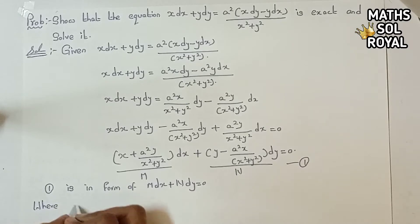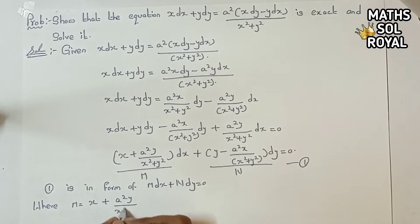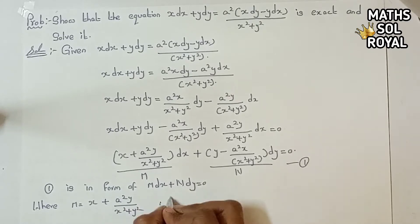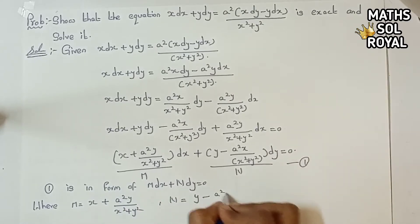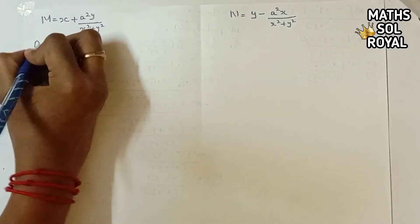Where M = x + a²y/(x² + y²) and N = y - a²x/(x² + y²). Then we differentiate partially — M with respect to y and N with respect to x.